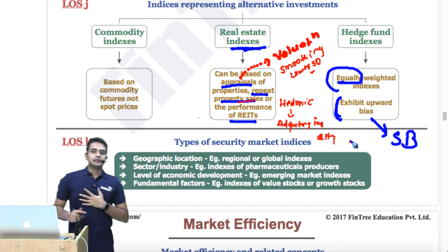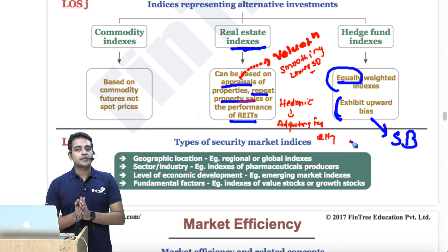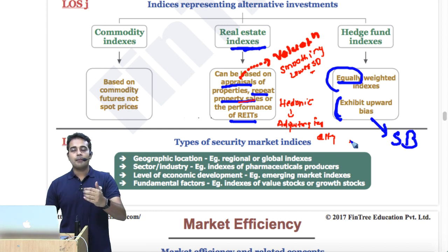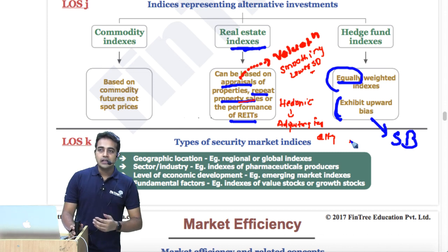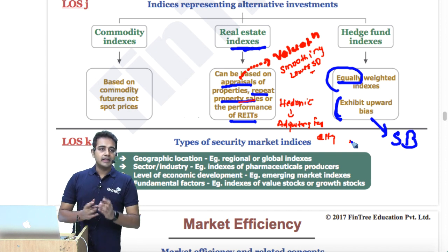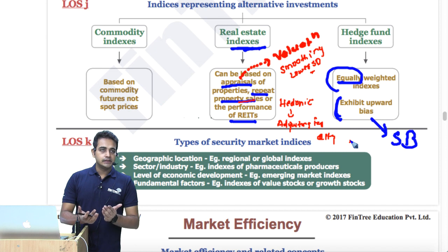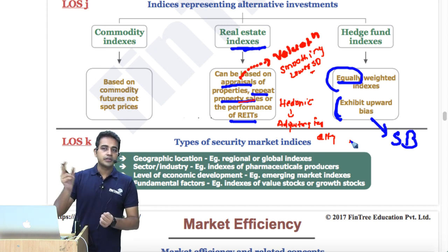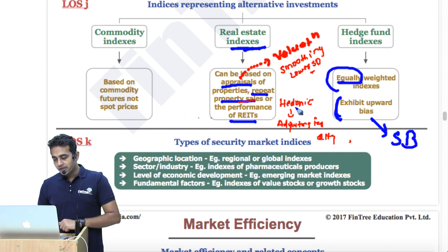For repeat property sales, the same property is sold again and again. Some of these indices could be hedonic — hedonic means adjusting for quality. For example, if we look at apartment prices per square foot over two years, the quality of the two properties compared could differ, so rates differ because of quality rather than general market movement. When you make that adjustment, we use the word hedonic.